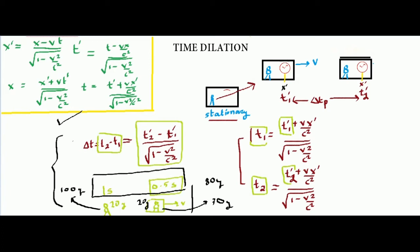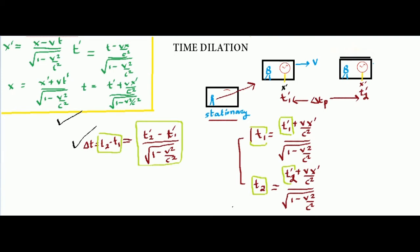I want to emphasize some facts about this formula. The quantity t2-dash minus t1-dash is called the proper time interval. By proper time interval I mean the time measured in the frame where the clock is located. Since the clock is in the moving frame, t2-dash minus t1-dash is the proper time. This relation is always written as: proper time multiplied by gamma equals delta-t, where delta-t is the time calculated from another frame.